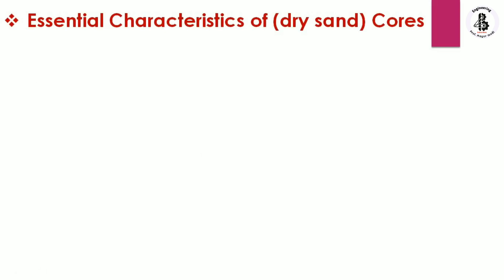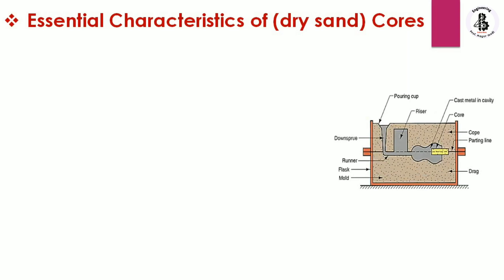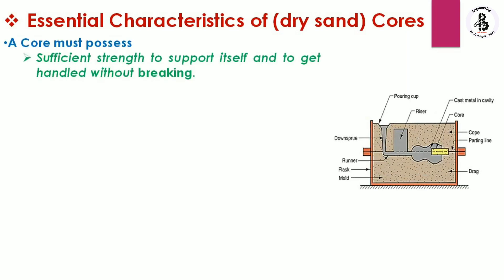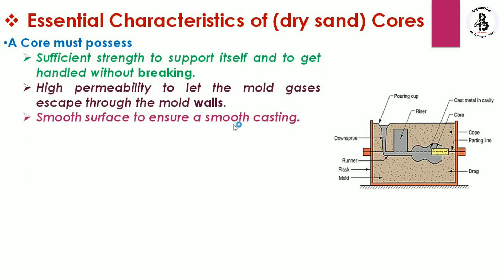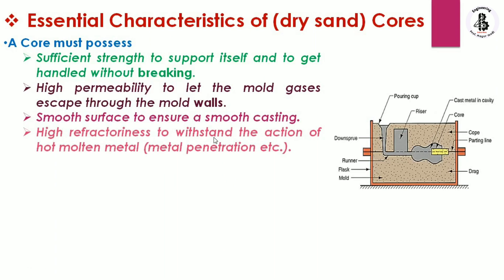Now the essential characteristics of dry sand cores — this is the general arrangement of the core we already learned. A core must have sufficient strength to support itself and to be handled without breaking. It must have high permeability to let mold gases escape through the mold voids, which also helps reduce casting defects. It should have smooth surfaces to ensure a smooth casting.